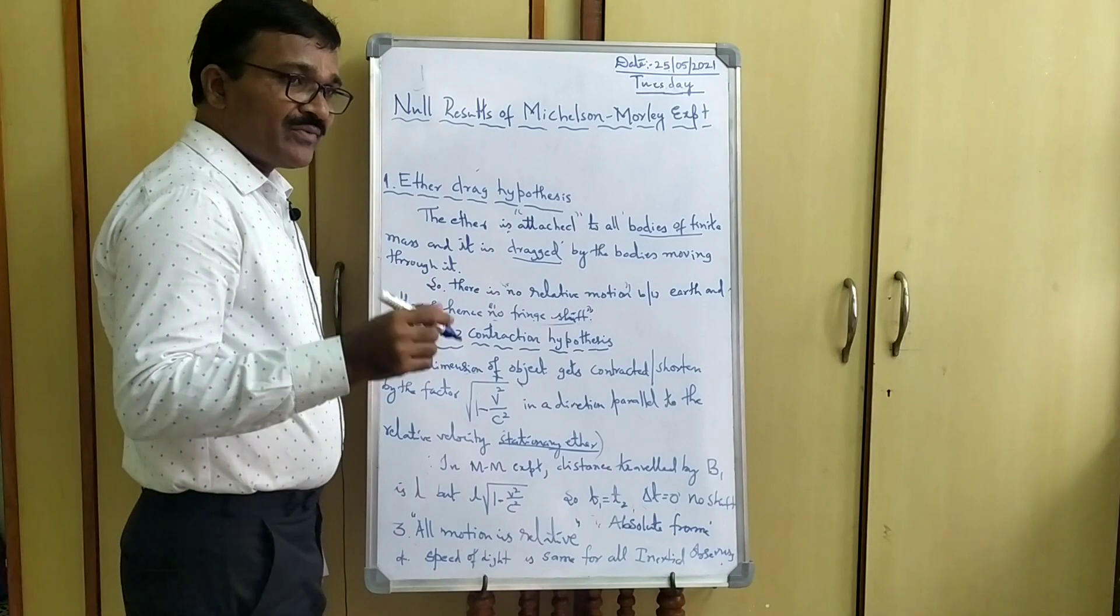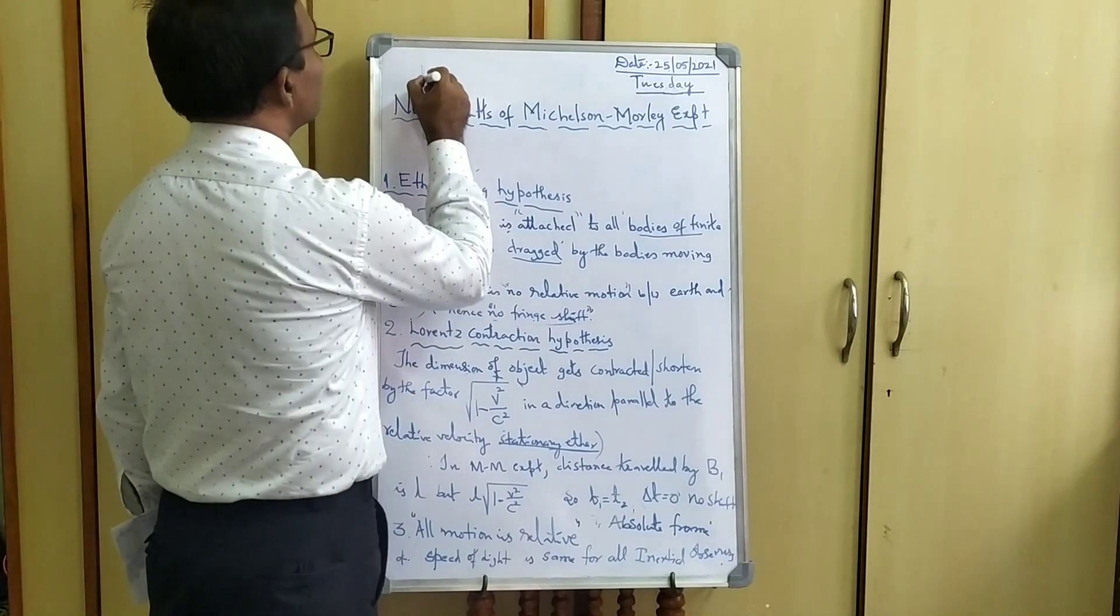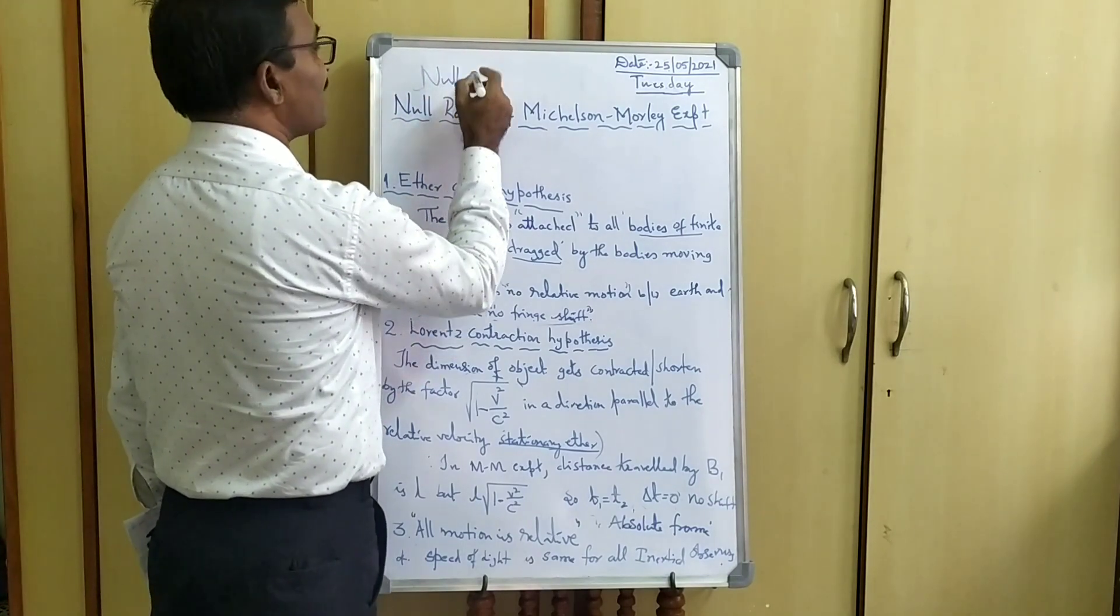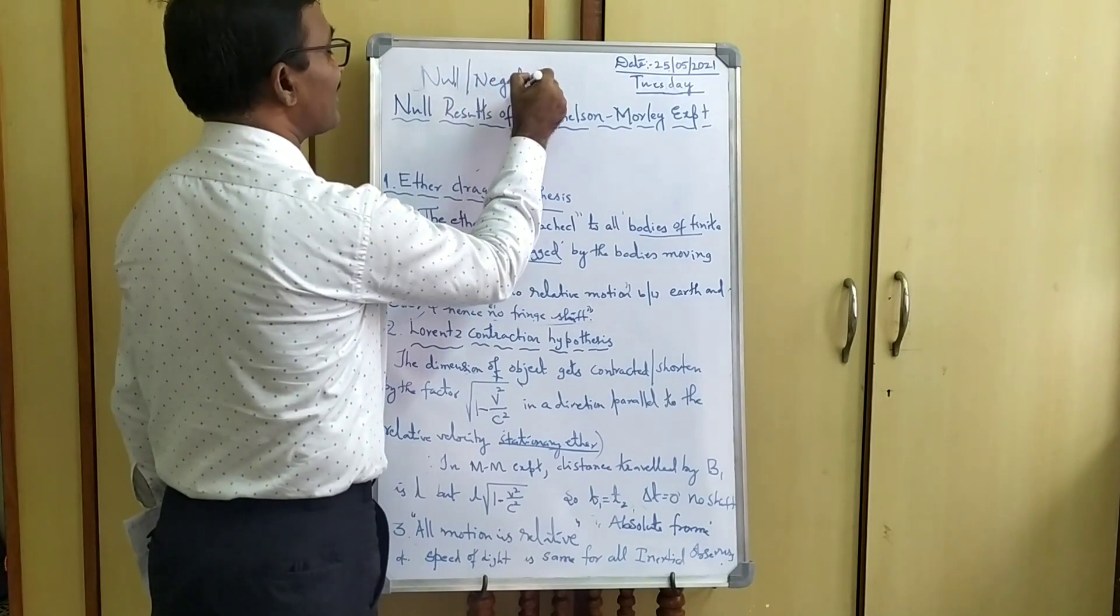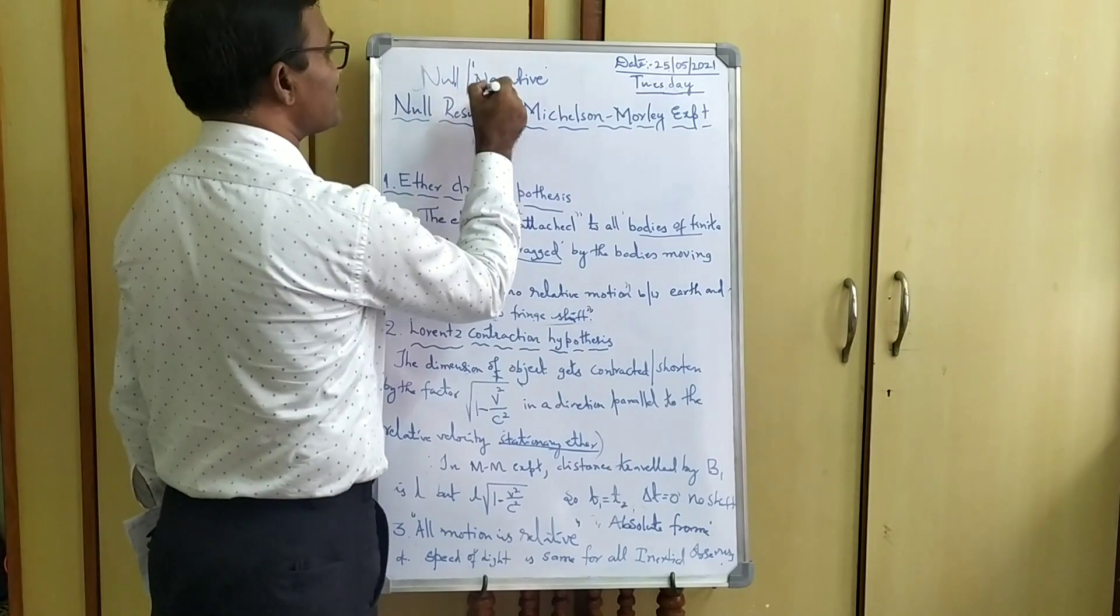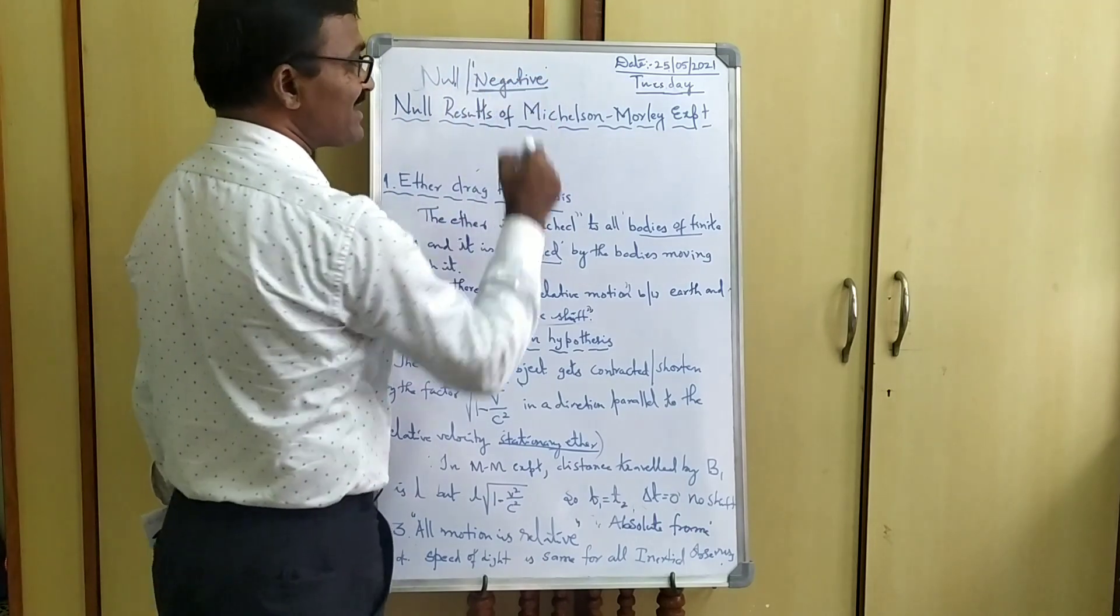You know that we discussed in the last class, Null Result is nothing but a negative result. This is the outcome of the Michelson-Morley Experiment.